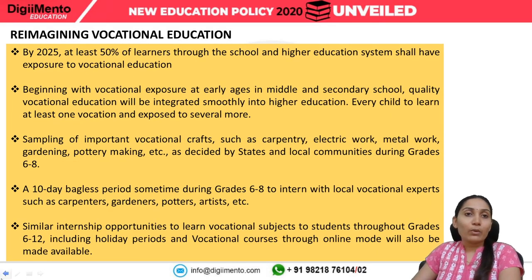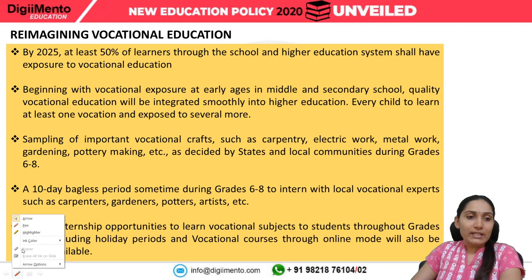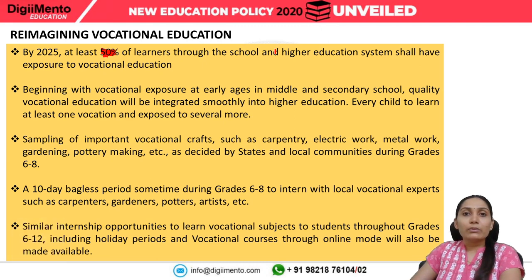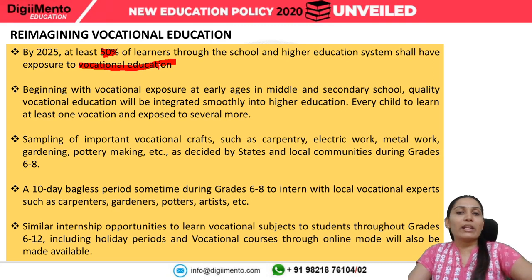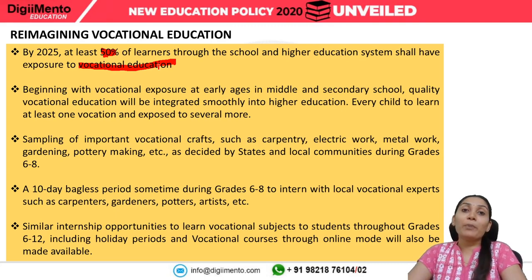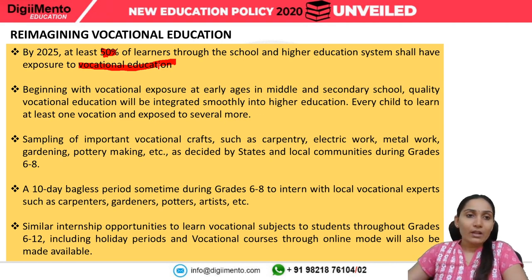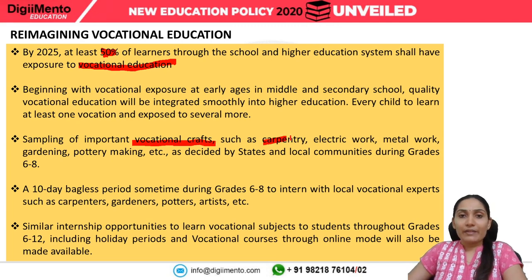By 2025, at least 50% of learners through the school and higher education system will have exposure to vocational education, increasing their skills and employability. Vocational training will be given in crafts, carpentry, electric work, metal work, gardening, and pottery making.